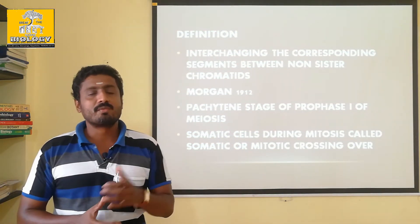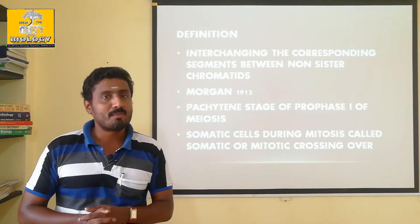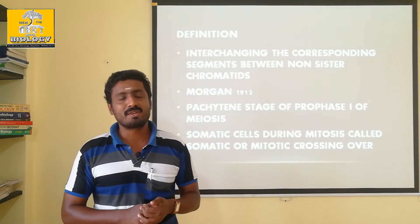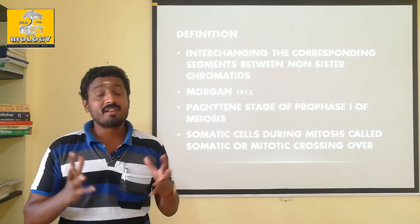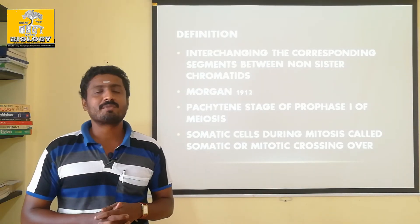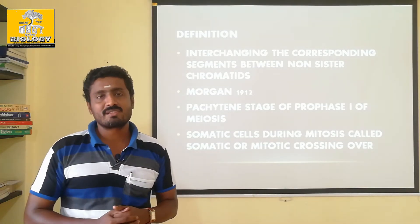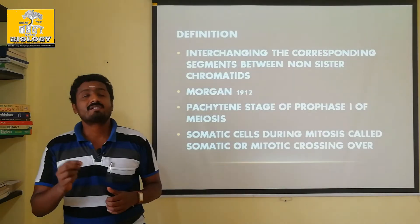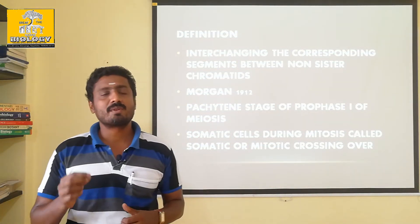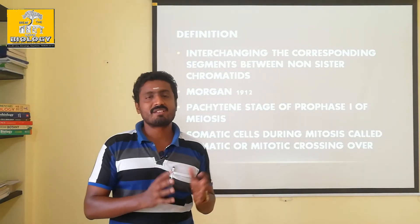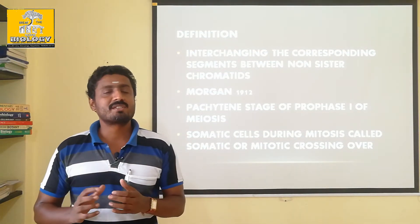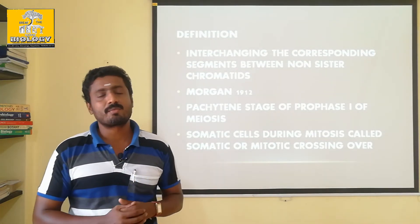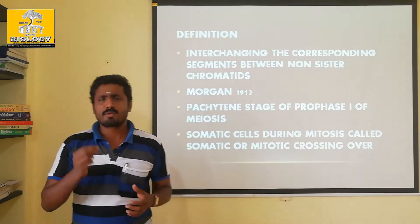If there is a variation in vegetative reproduction, there is no variation. In sexual reproduction, if it's a recombination, it's a recombination frequency. In asexual reproduction, the variation is very, very small.